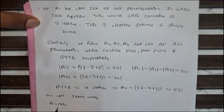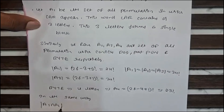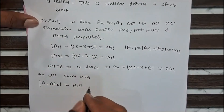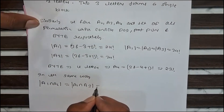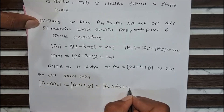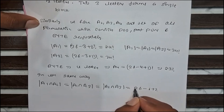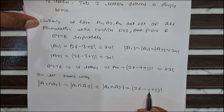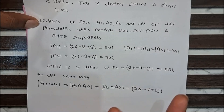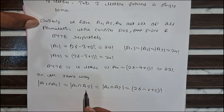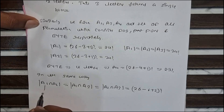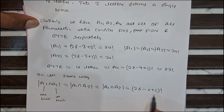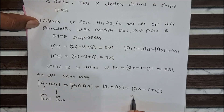In the same way, A1 ∩ A2 = A1 ∩ A3 = A2 ∩ A3 = (26 − 6 + 2) factorial = 22 factorial. This is because A1 contains three letters and A2 also contains three letters, giving six total letters forming two blocks, so we get 22 factorial.